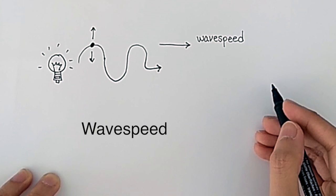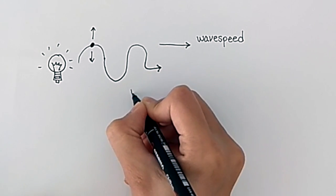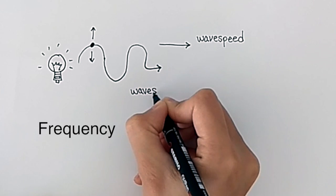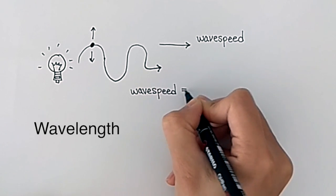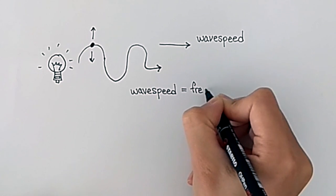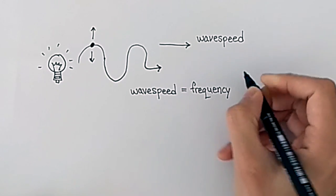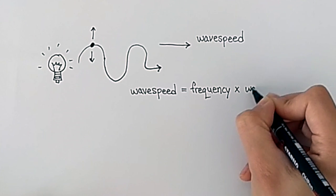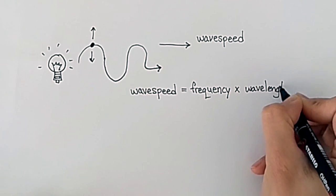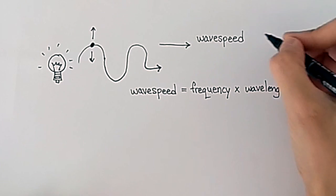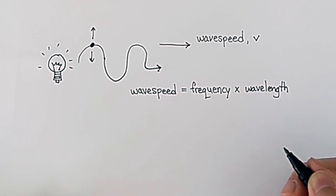The wave speed of a wave is related to two things: frequency and the wave's wavelength. Wave speed is equal to frequency times wavelength. In symbol format, we say v is equal to f lambda.